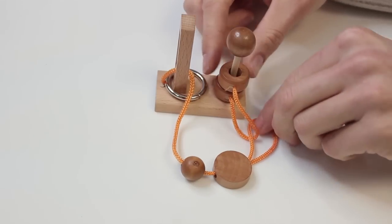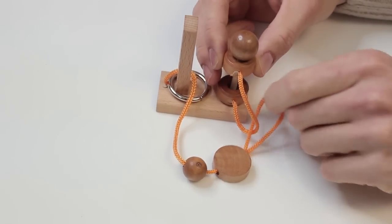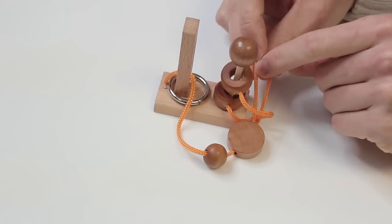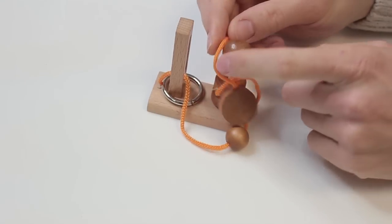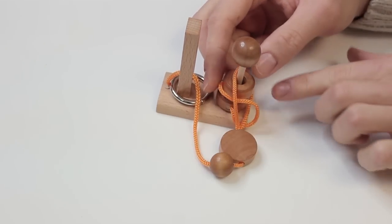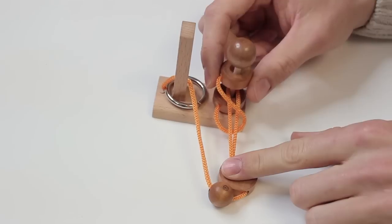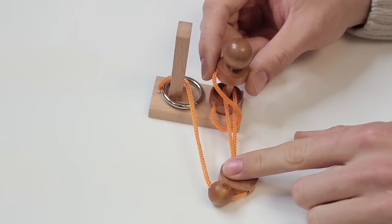So the first step is to make sure the loop that's attached to the wooden disc is not around the string that's attached to the wooden rings, but instead loop it so that it's just around the post. You can see it around the post there.